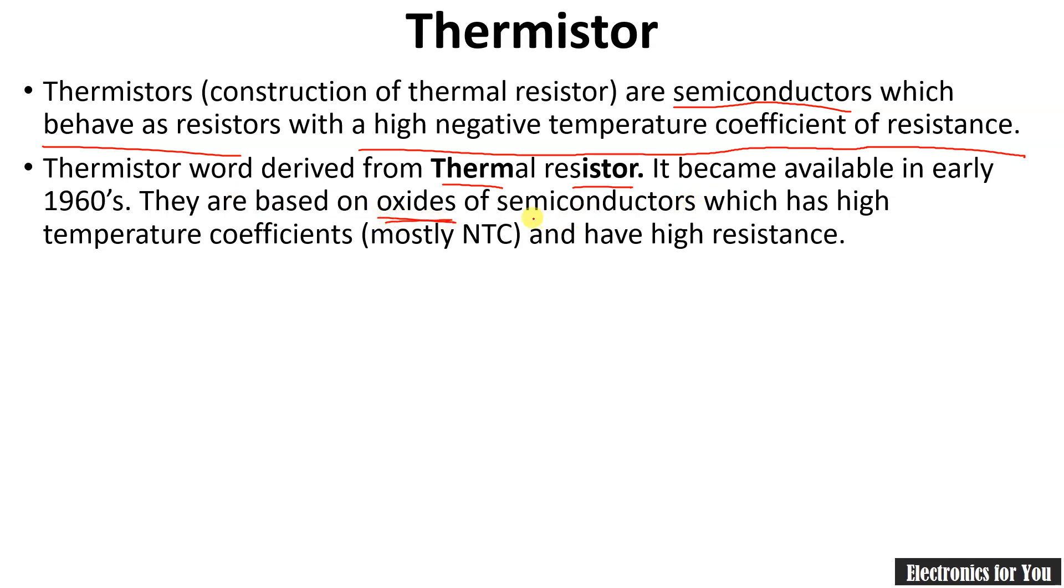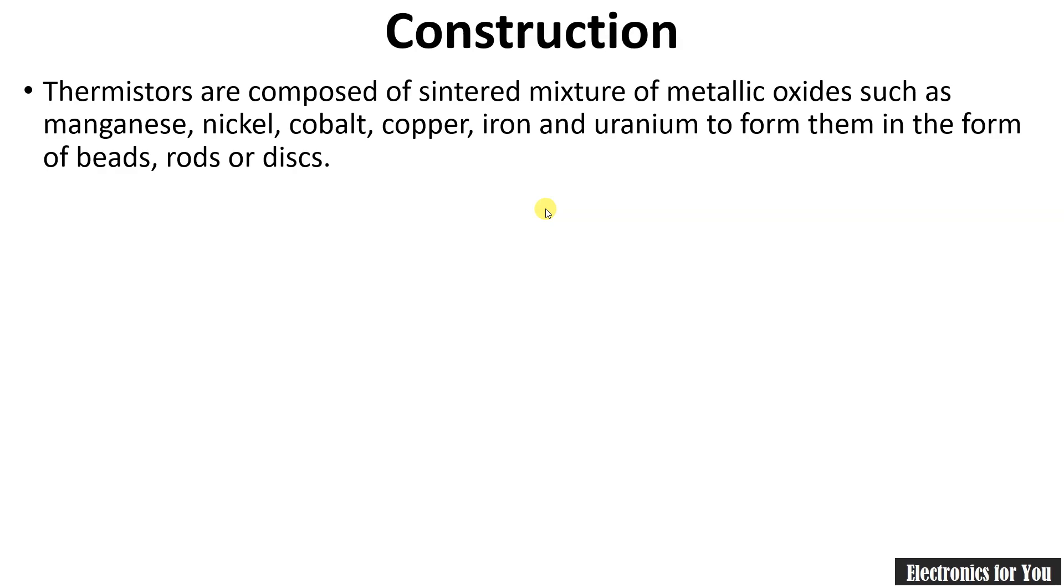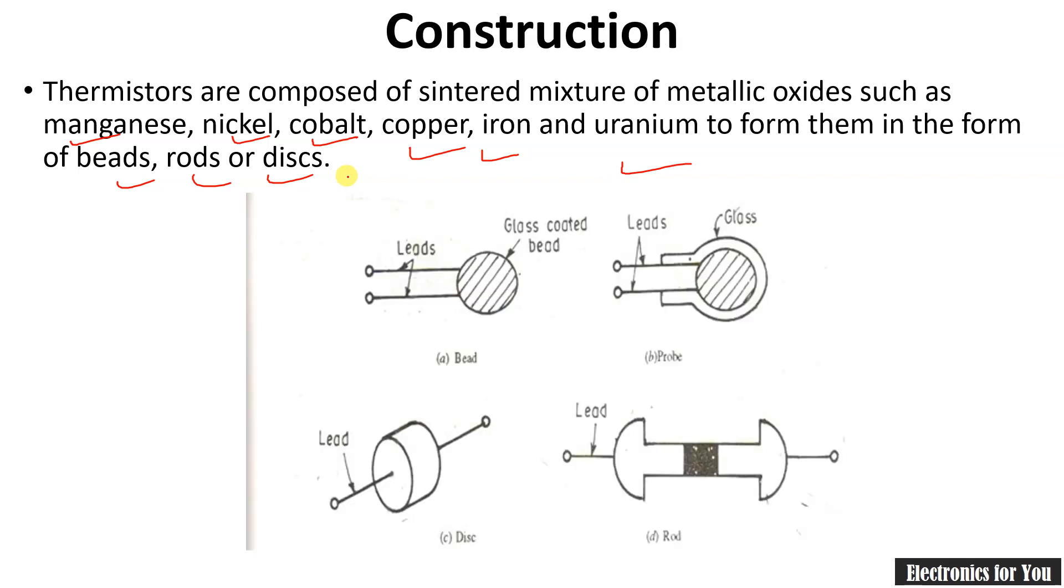Oxides of semiconductors can also be used which show the properties of NTC. Some metal oxides can be used in construction, such as manganese, nickel, cobalt, copper, iron, and uranium to form them in the form of beads, rods, or discs. We have different shapes and sizes of thermistor such as bead shape, probe shape, disc shape, and rod shape.